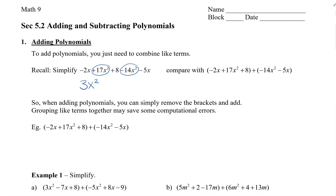Now let's look at our x's. We have negative 2x and we have a negative 5x, and again these are like because they have a single variable x with the same exponent of 1. So negative 2x minus 5x is negative 7x. And then lastly, we have our single constant plus 8 which doesn't combine with anything.